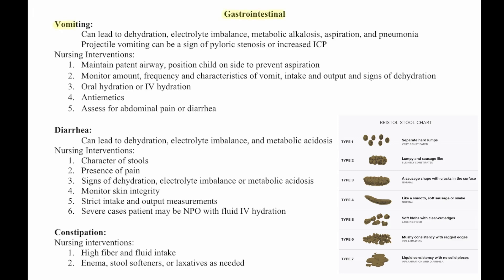The first topic is vomiting. The main things to know are that it can lead to dehydration, electrolyte imbalance, metabolic alkalosis, aspiration, and pneumonia. Projectile vomiting can be a sign of pyloric stenosis or increased intracranial pressure.